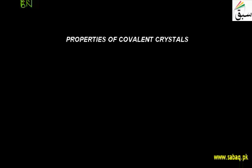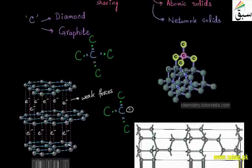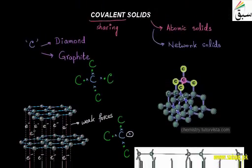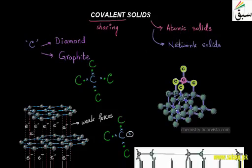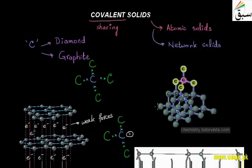Students, we will see the properties of Covalent Crystals or Covalent Solids. Covalent Solids are such solids which have covalent bonding, and these crystalline solids are called Covalent Crystals. Covalent Solids are atomic solids because these atoms are joined by covalent bonds. These are networks of atoms, which we have seen in Diamond and in Graphite. So we have Covalent Solids, Network Solids, or Atomic Solids.